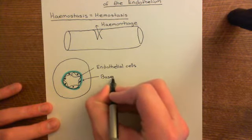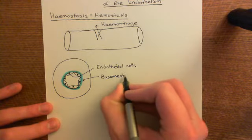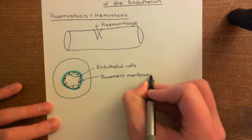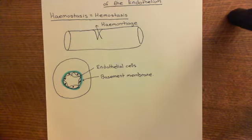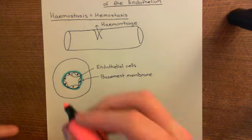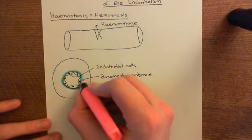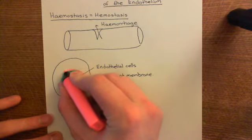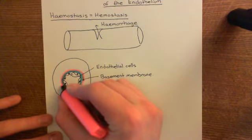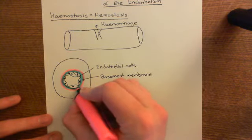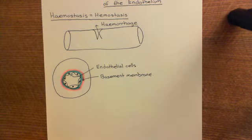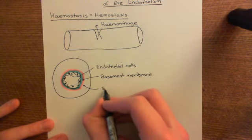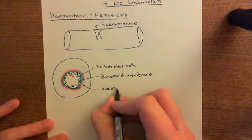Underneath the basement membrane, there is another layer of connective tissue, which again mainly consists of collagen. This is known as the subendothelial connective tissue — sometimes also referred to as the subendothelial space. So that layer beneath the basement membrane is the subendothelial connective tissue, and it mainly consists of collagen.